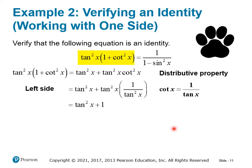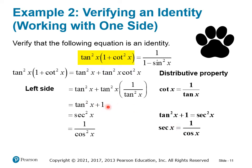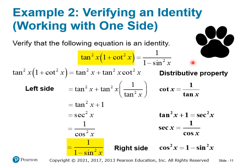Tangent squared plus one should trigger recognition of a Pythagorean identity. Rewriting tangent squared plus one as secant squared, we know secant squared equals one over cosine squared. Now that triggers cosine squared plus sine squared equals one, which we can manipulate to get cosine squared equals one minus sine squared. Substituting that in, we get one over (one minus sine squared x), which is exactly the right side of the equation. We've verified that the left side, through simplification and known identities, equals the right side.